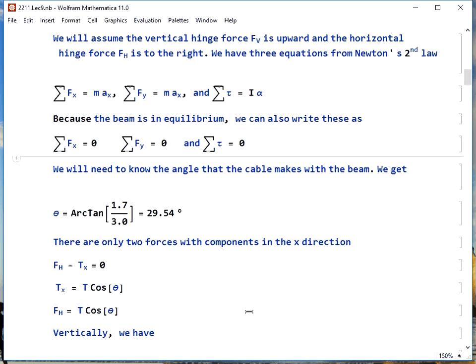We also are going to want to know the angle between the cable and the beam, so we can take the arc tangent of 1.7, which is its height, over 3, which is the length of the beam, and we get 29.5 degrees.